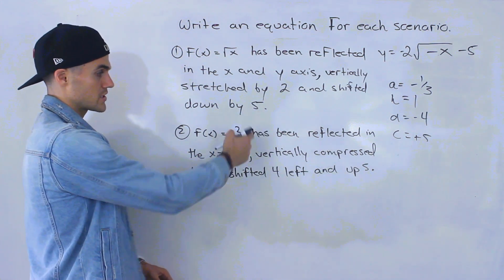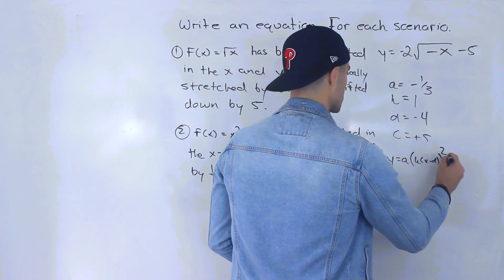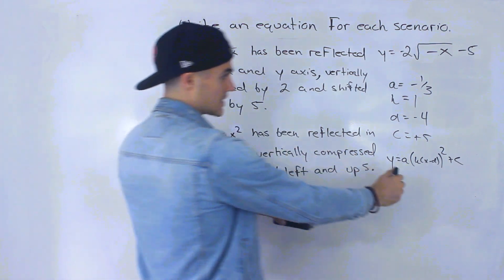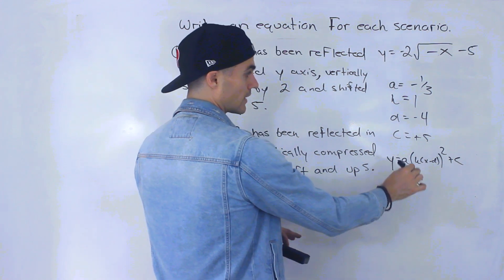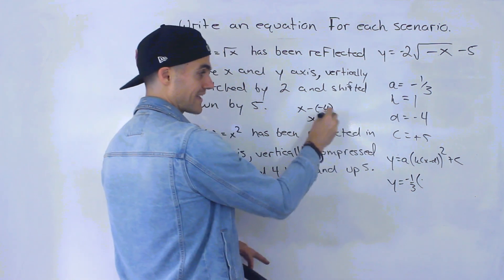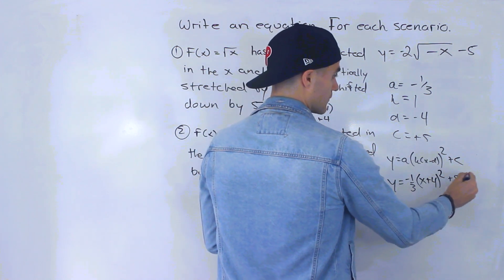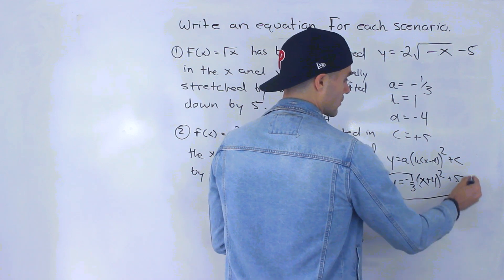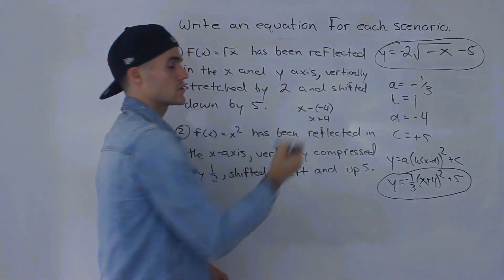Now apply those transformations to the parent function x². The general transformed format for this parent function is a(k(x − d))² + c. Plugging everything in: the a value is negative 1/3; k is 1, so we don't need to write anything there; d is negative 4, so x minus (−4) becomes x plus 4; and c is positive 5. The final equation is y equals negative 1/3 times (x + 4)² plus 5. That is the equation for number two.